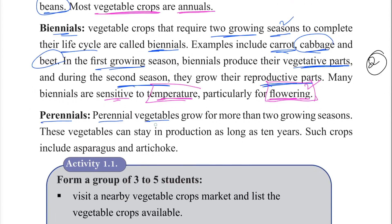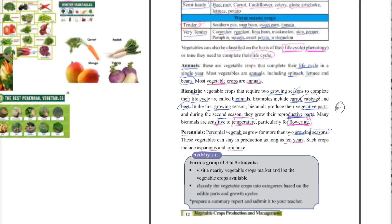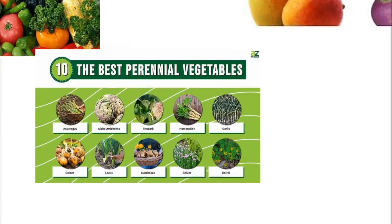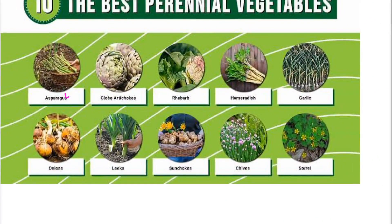Perennial vegetables grow for more than two growing seasons. These vegetables can stay in production for as long as 10 years. Examples include asparagus, artichoke, onion, garlic, and shallots.